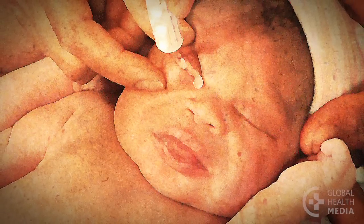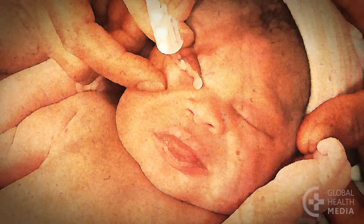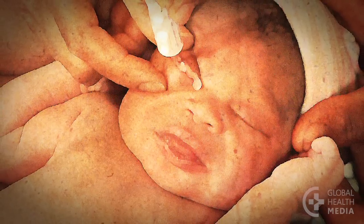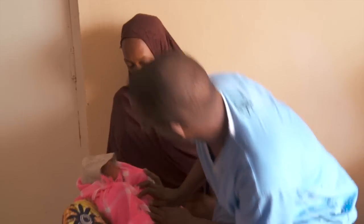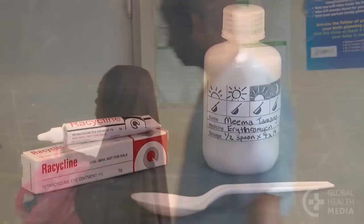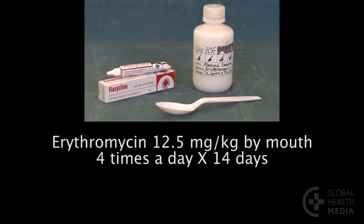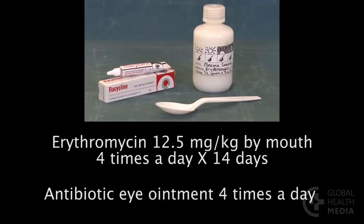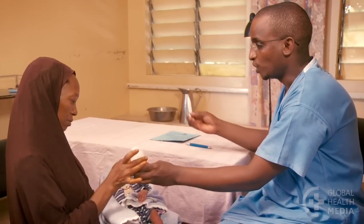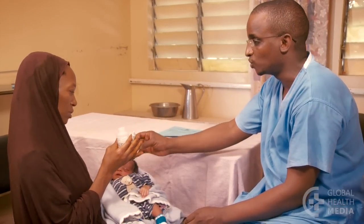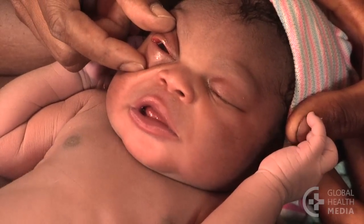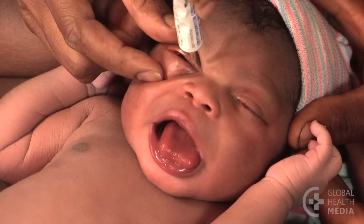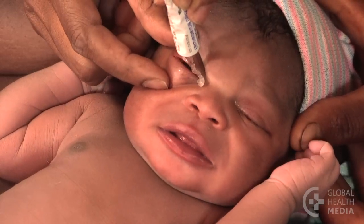Managing a moderate eye infection or a mild eye infection that has not improved: if the baby's eyes have not improved after four days, she should now be treated with erythromycin by mouth and antibiotic eye ointment. The medicines are given four times a day for 14 days. To apply eye ointment, gently open the baby's eyelids and run a line of ointment across each eye from inside to outside.